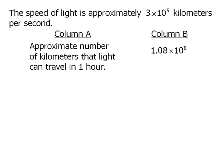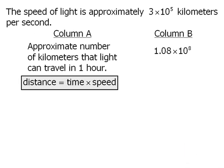All right, to calculate the distance in column A, we'll need the following formula. Now keep in mind here that column A requires us to determine the distance that light can travel in one hour, while the question gives us the speed of light in kilometers per second.